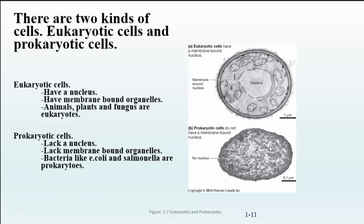There are two kinds of cells, eukaryotic cells and prokaryotic cells. This is an important difference. Eukaryotic cells have a nucleus. They have membrane-bound organelles. Organelles are like mini organs inside of a cell. They each have their own function inside of a cell. And when you think of eukaryotic cells, you're thinking of animals, plants, and fungus. So we're eukaryotes. We're eukaryotic organisms. What's a prokaryote? A prokaryote doesn't have a nucleus. It doesn't have membrane-bound organelles. And when you're thinking of prokaryotes, you're thinking of bacteria, E. coli, salmonella, things like that.